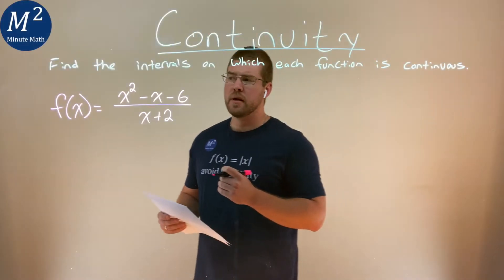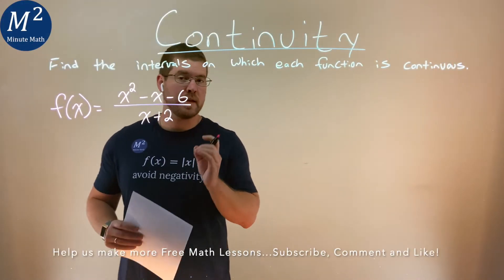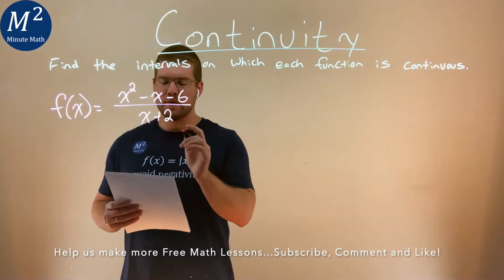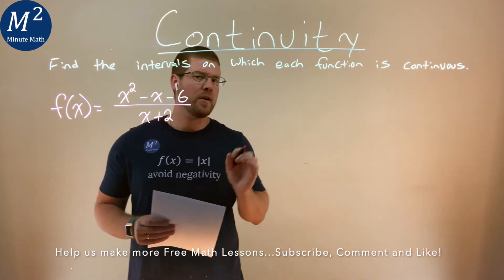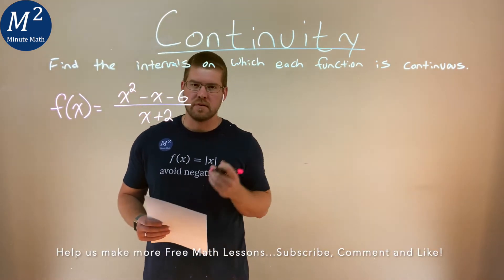We're given our function right here, f of x is equal to x squared minus x minus 6 divided by x plus 2. And we define on what intervals this function is continuous.